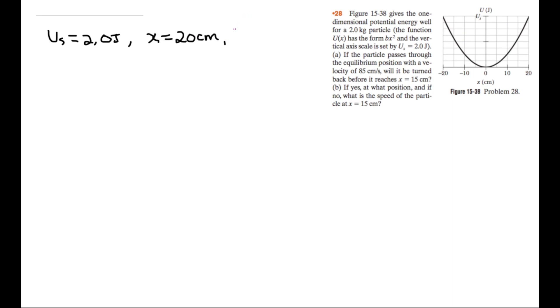And we know that U of x is equal to bx squared. So then we can solve for b. We have 2.0 is equal to b, and you have to use meters, 0.2 squared. So then b, just rearranging this and solving, is equal to 50.